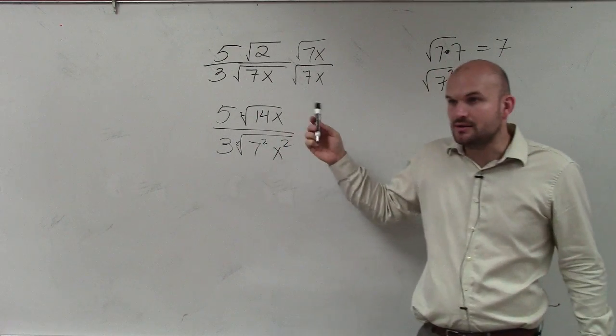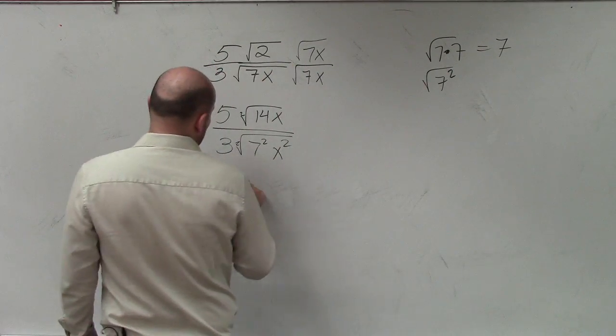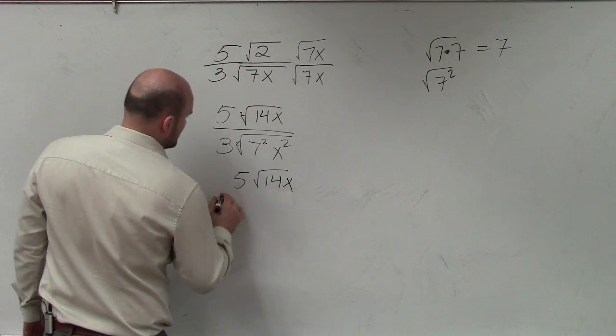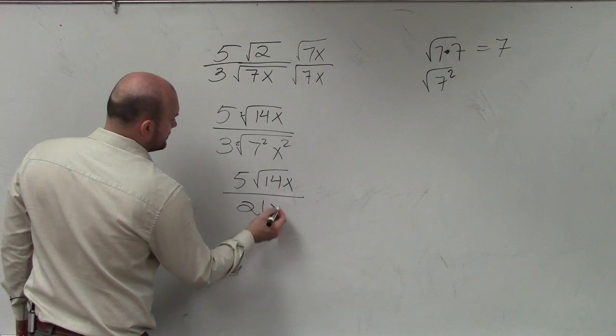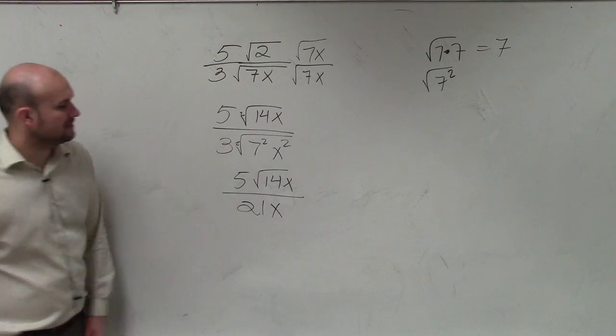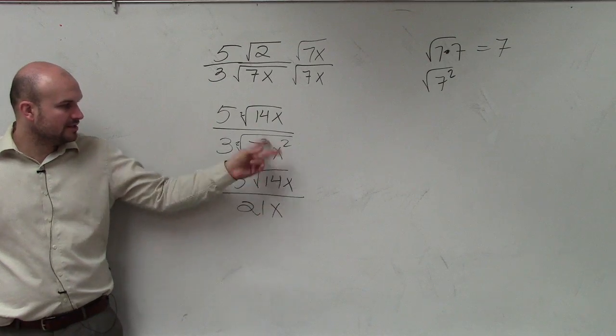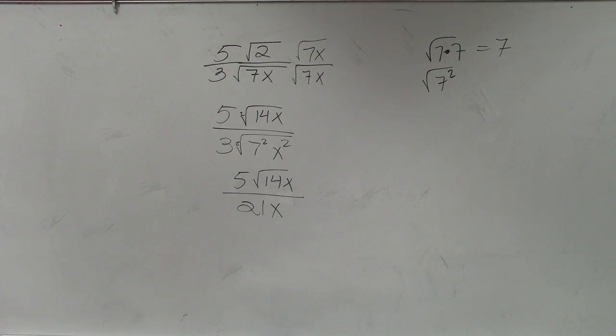So what's the square root of 7 squared? 7. Square root of x squared? X. So your final answer is 5 square root of 14x divided by 21x. Because square root of 7, square root of 7, 7 times 3 is 21. Square root of x squared is x. That's your final answer. So that is your simplified answer without a radical in the denominator.